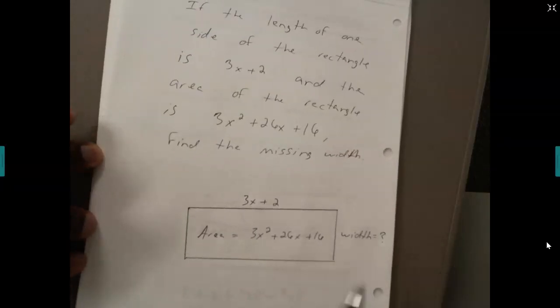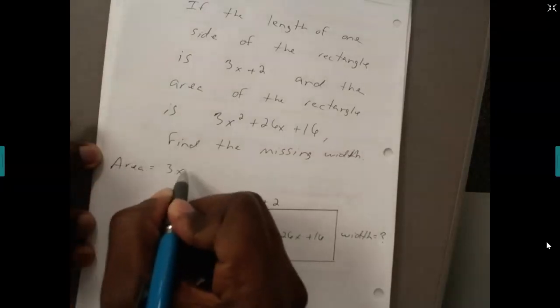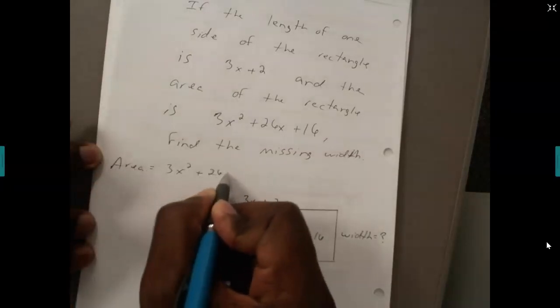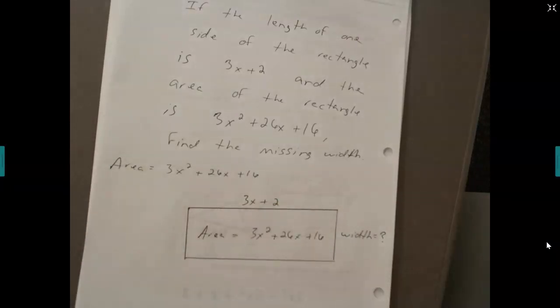To find the width, I'll basically factor the area and figure out which factor I don't already have. If the area of this problem is 3x to the second plus 26x plus 16, we'll factor that.